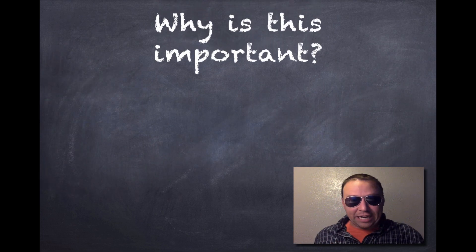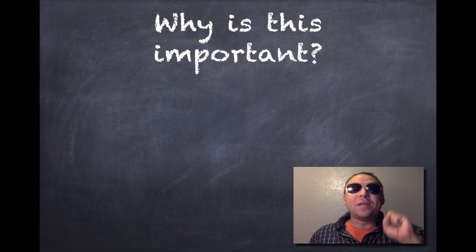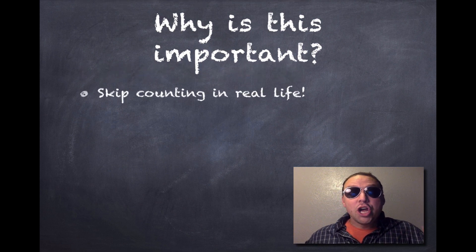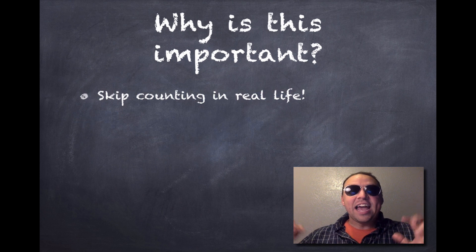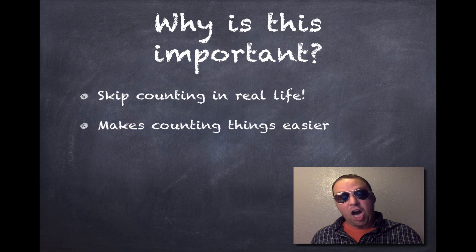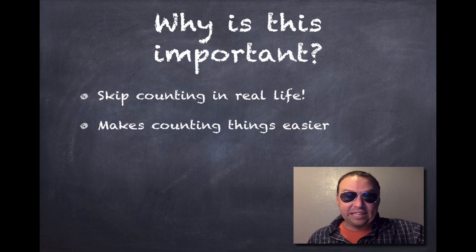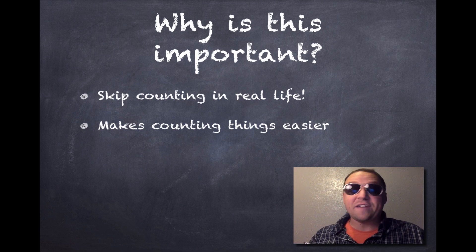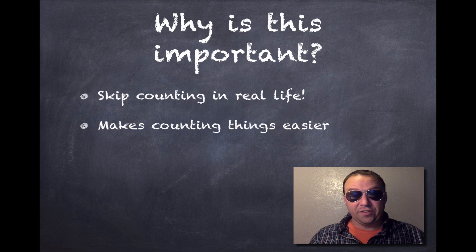I've already showed you how to group things by 5 and group things by 2. When you're grouping things by 10, you're usually counting things — probably counting them in real life. Like when somebody dumps a big cup of pennies on the table and you're trying to count it up. I use grouping, and grouping by 10 is one of my favorite ways to count coins specifically.